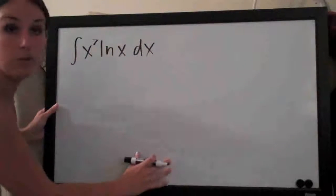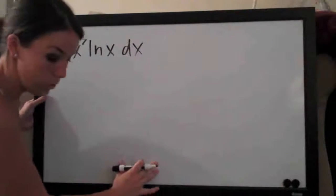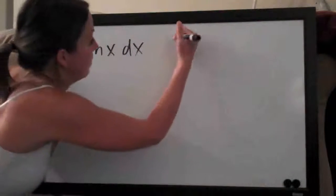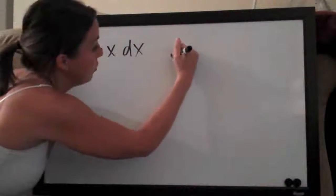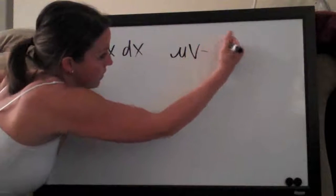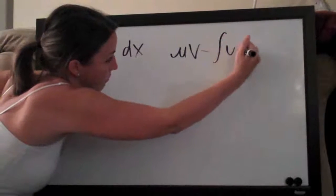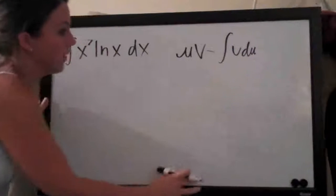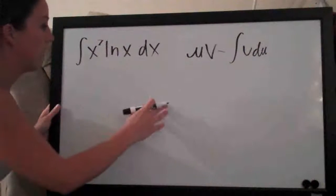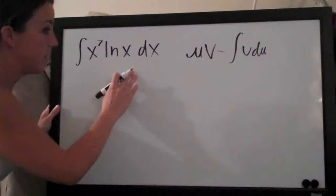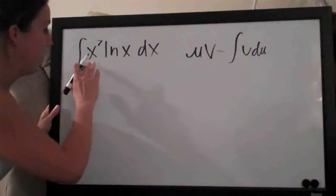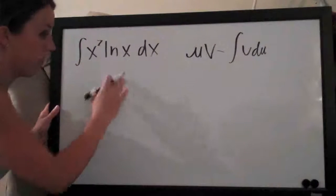So we're going to be using the integration by parts formula, which if you'll remember is uv minus the integral of v du. And what we do is assign u and dv to each term in our problem here.